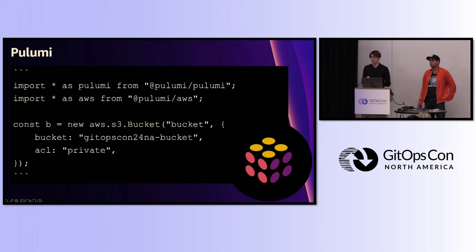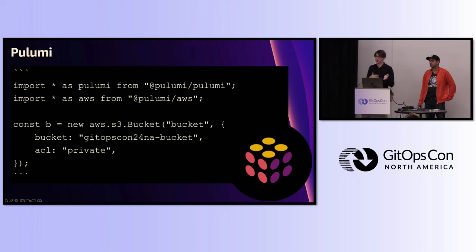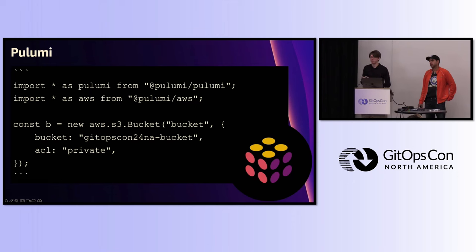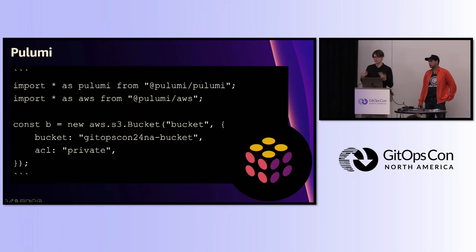Pulumi has state management in the cloud, so unlike Terraform where you have to manage state in S3, Pulumi manages all that in the cloud, putting less burden on us. We can also create multiple stacks using the same set of code, allowing us to deploy several different versions of our clusters quickly from the same codebase. It also allows us to parameterize stack configuration using YAML files, changing configuration based on what stack we're creating.